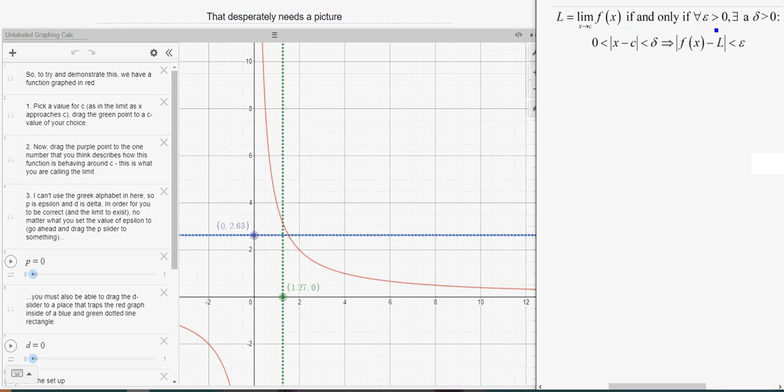for all epsilon values greater than zero, no matter how small, there exists a delta value that is greater than zero, such that if we choose values of X within delta units of C, then we will get outputs that are within epsilon units of L.